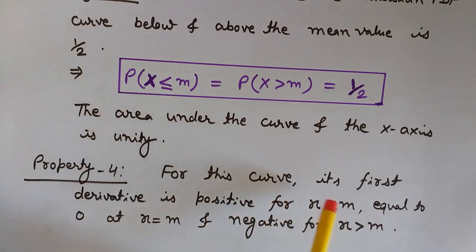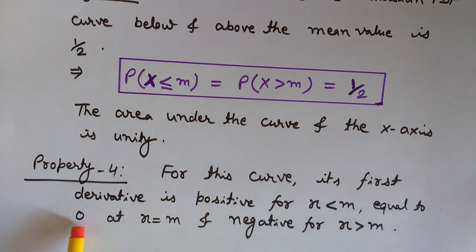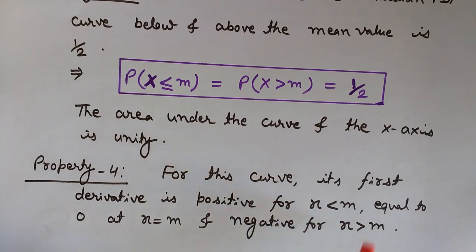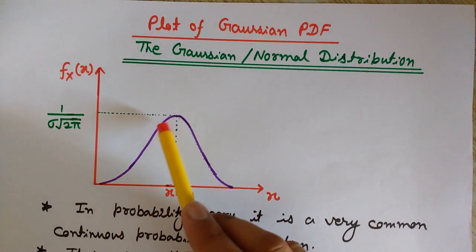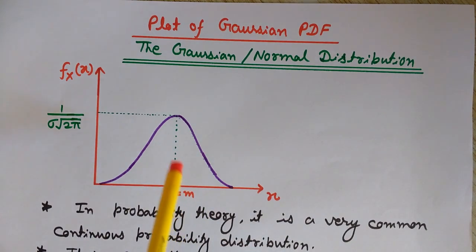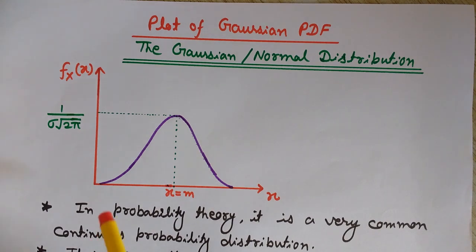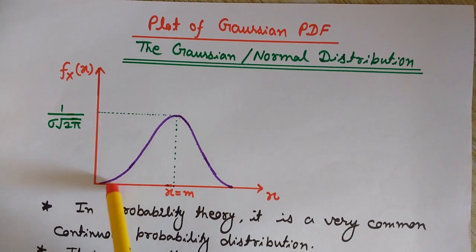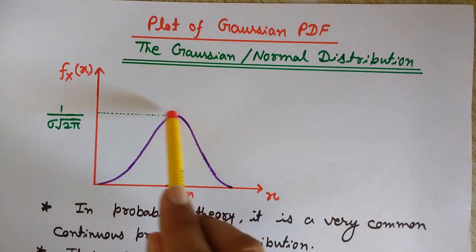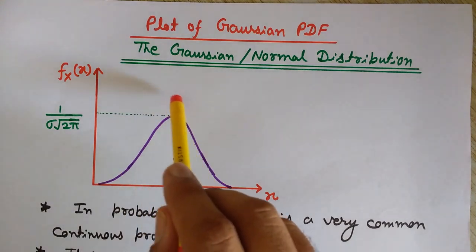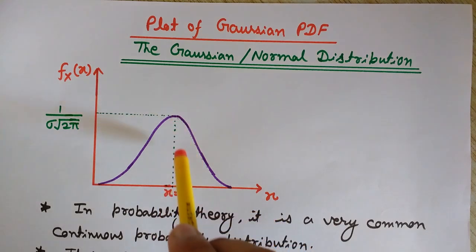Property number four: for the Gaussian distribution plot, its first derivative is positive for x less than m, equals zero at x equals to m, and is negative for x greater than m. Looking at this curve of the Gaussian PDF, we have three regions for the first derivative. The part for x less than m has a positive derivative, at x equals to m the derivative is zero.